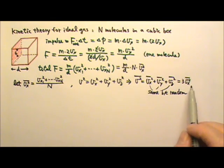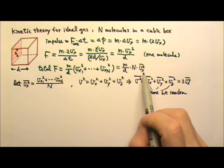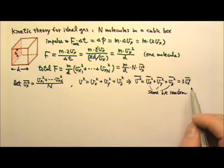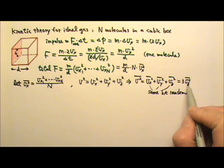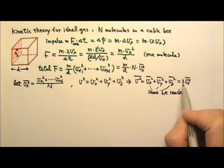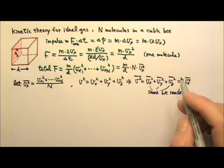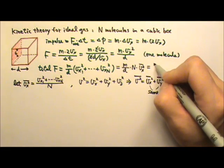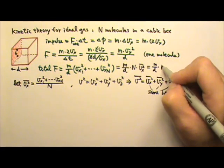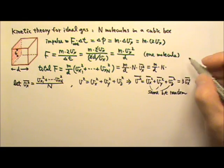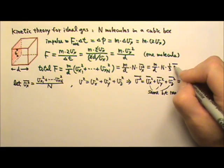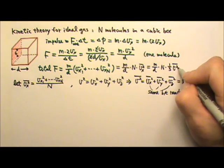This means I can replace the average of vx squared with the average speed squared divided by three. So the total force becomes m over d times n times one third times the average speed squared.